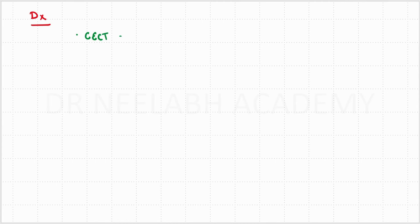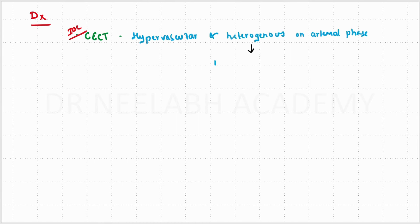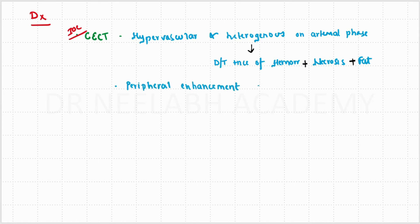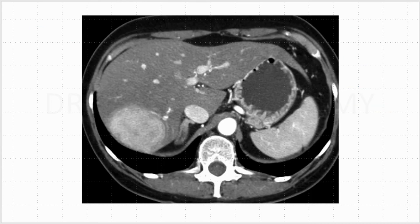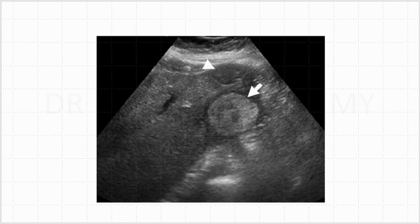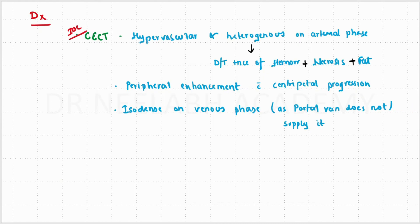Coming on to the diagnosis, the investigation of choice is CT abdomen, on which we can see a hypervascular and heterogeneous lesion on arterial phase. Heterogeneity is due to the presence of hemorrhage, necrosis, and fat. There is a peripheral enhancement with centripetal progression, and they are isodense on venous phase because the portal vein does not supply these lesions. This is the CT showing heterogeneous areas in the lesion, and this is the finding on USG showing multiple heterogeneous areas representing necrosis or hemorrhage.